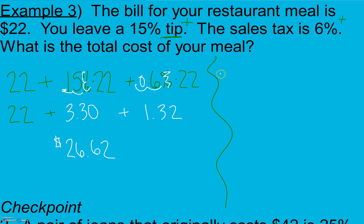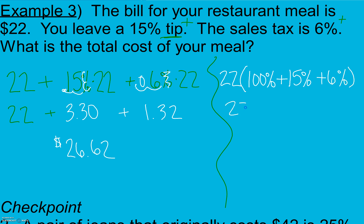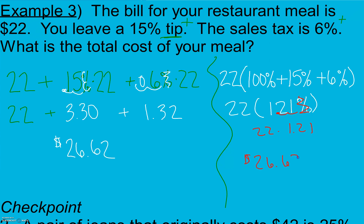We can also do this the same way as before: take our meal cost, pay 100% of it, add on 15% for the tip, and add on 6% for tax. That means we're actually paying 121% of our food price. Moving the decimal two places, 22 times 1.21 also gives us $26.62. It doesn't matter which way we do it — find the total amounts and add them up, or find the total percent and multiply. We'll get the same answer.